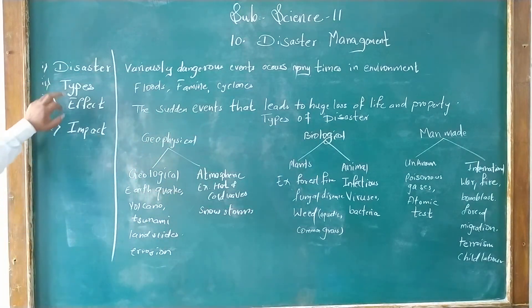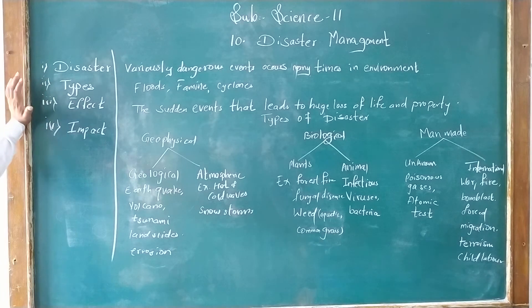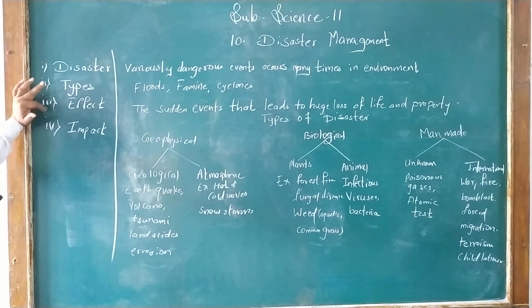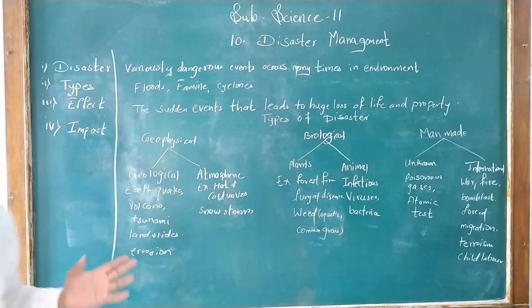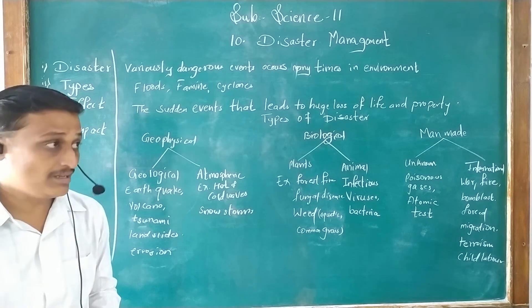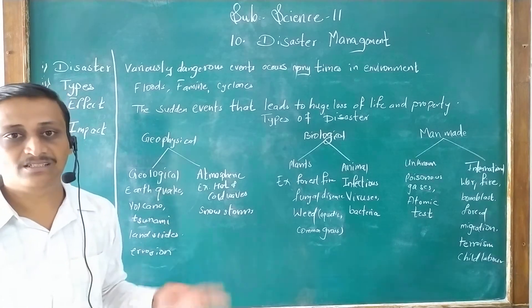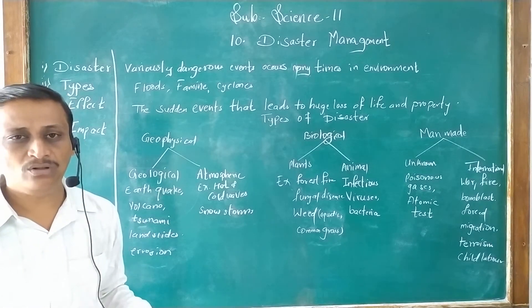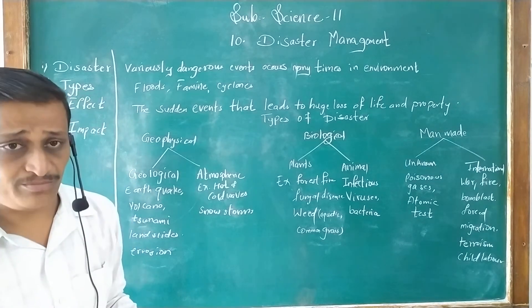First, Disaster — what is that term? Second, Types of Disaster. Next, Impact and Effect of Disaster. These so-called things are related to disaster — the chapter's disaster, its effect, its impact — all those things we are going to see in this chapter.